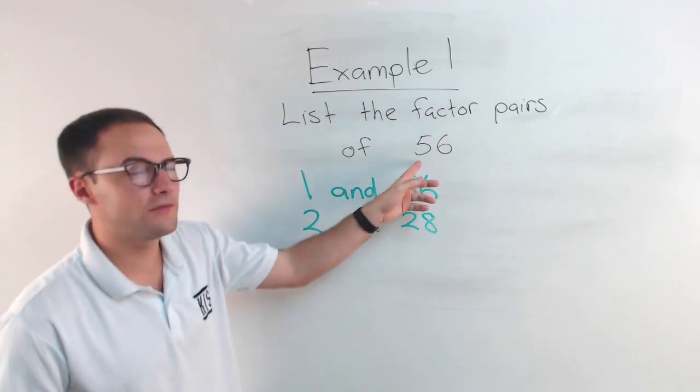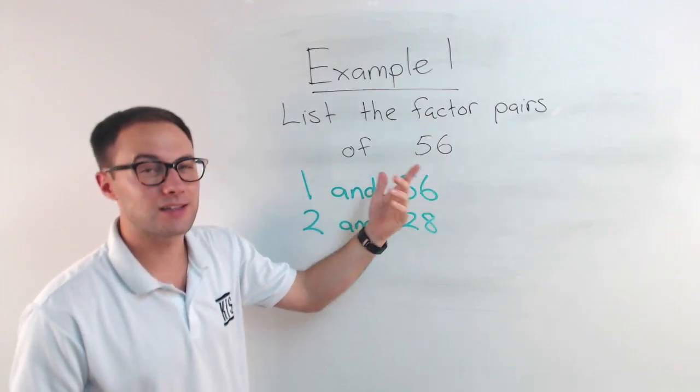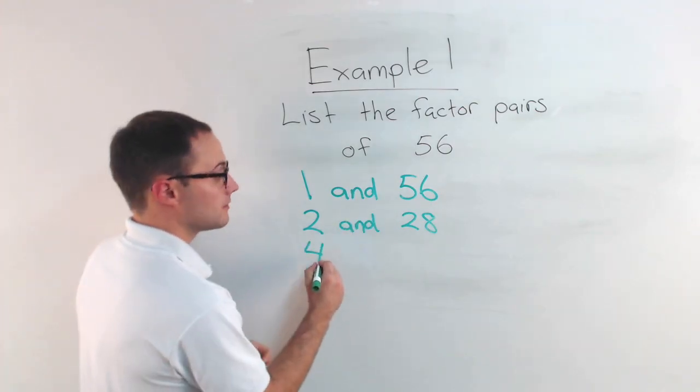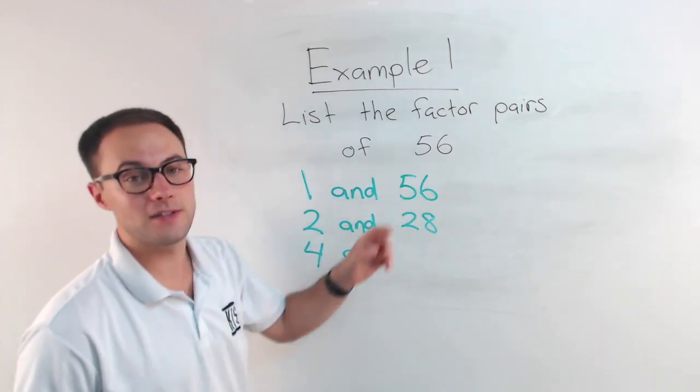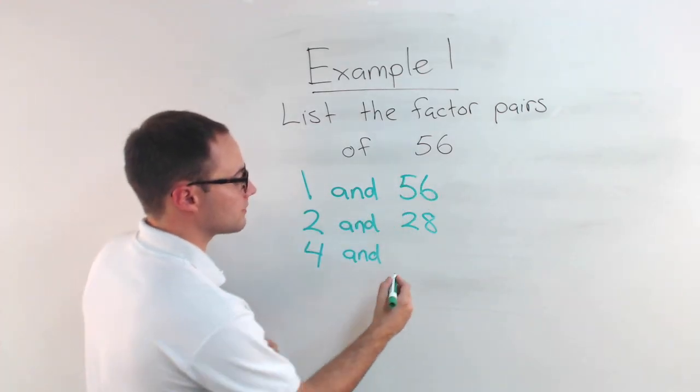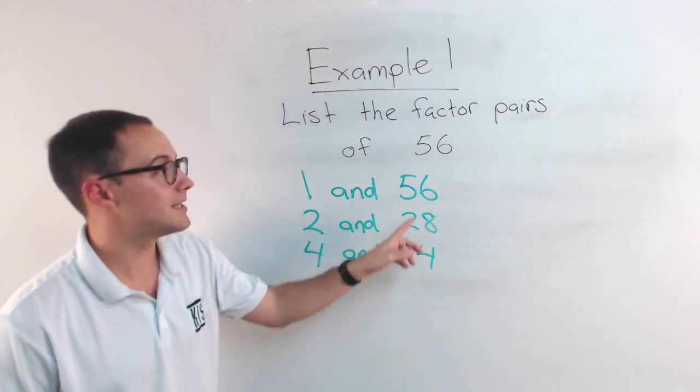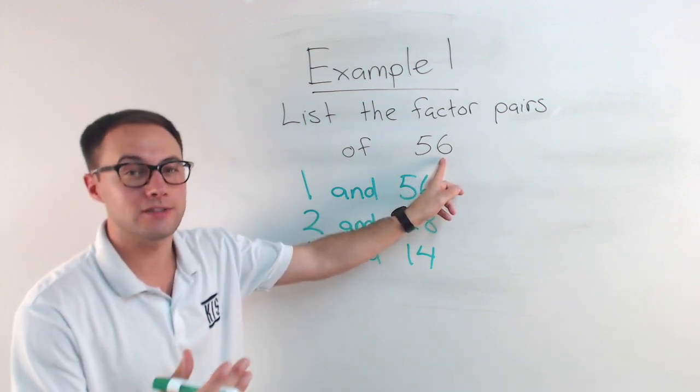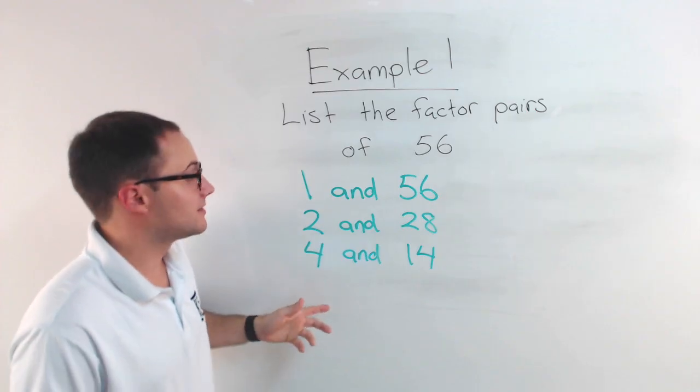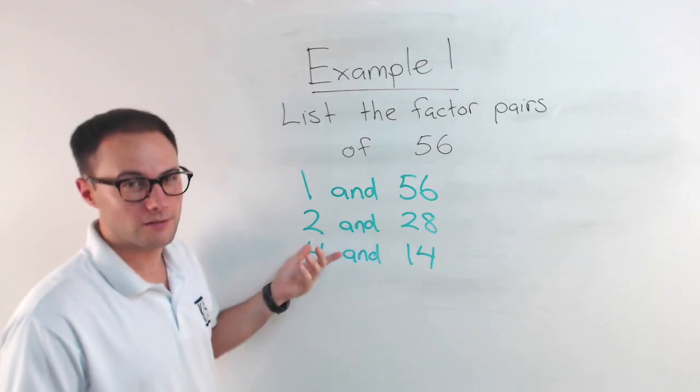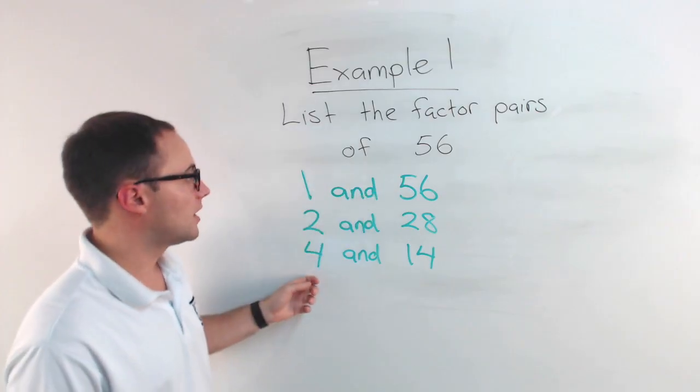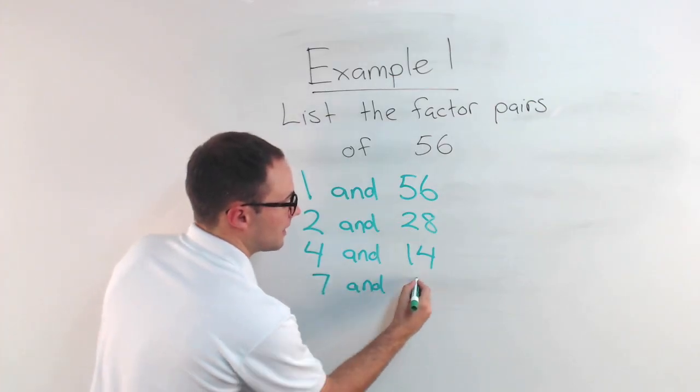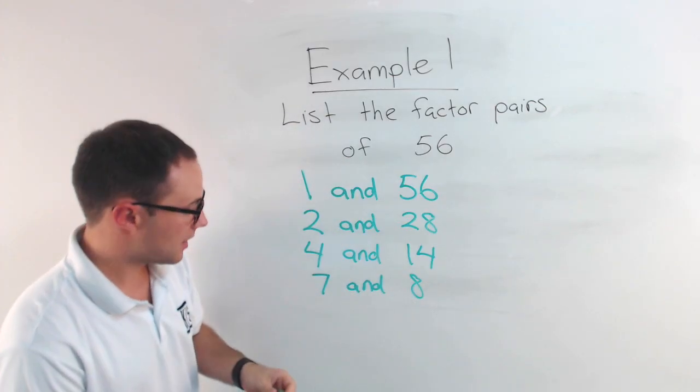Three is not. If you know your divisibility rules, the sum of the digits is 11. That's not divisible by three, so three doesn't work. How about four? Four is a factor of 56. Four into 56, it goes 14 times. Four times 14 is 56. Five doesn't work because this last digit doesn't end in a five or a zero. Six doesn't work because we needed a three as a factor if six was going to work. Seven, hopefully you know seven times eight is 56. So seven and eight is another factor pair.